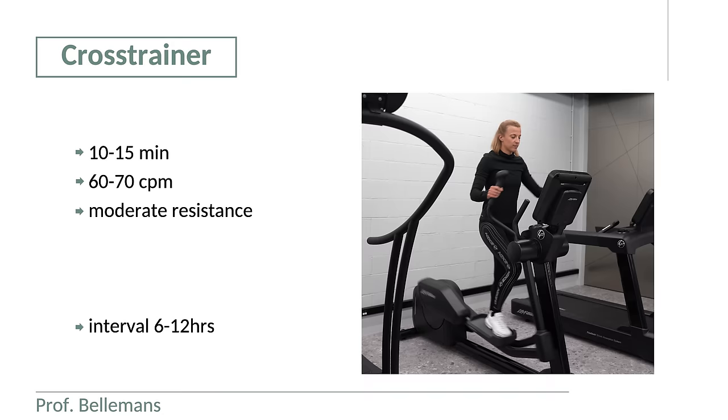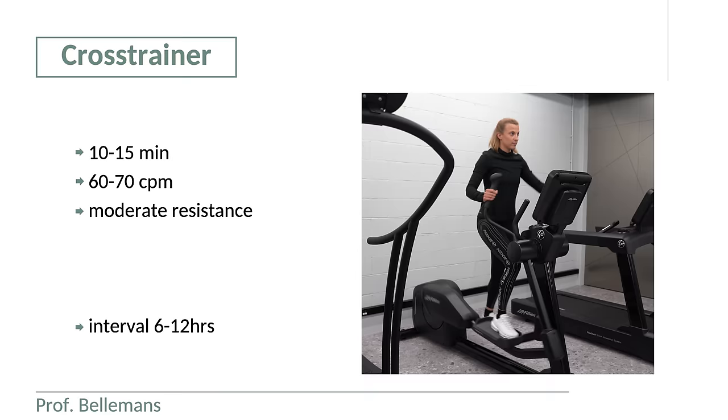If you don't like to bike, there are alternatives. For example, the cross trainer. 10 to 15 minutes, 60 to 70 cycles per minute, moderate resistance, 6 to 12 hours minimum interval. That means once, maximum twice a day.